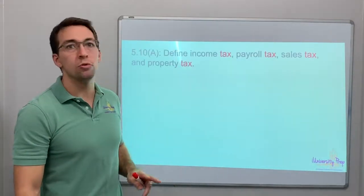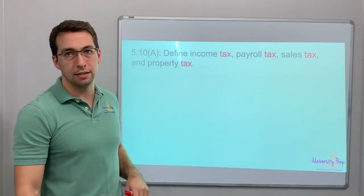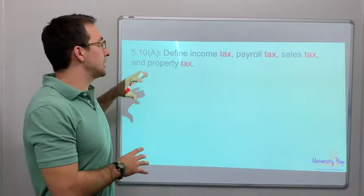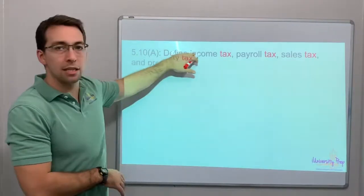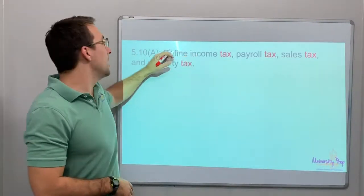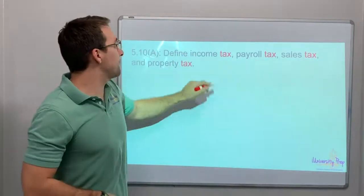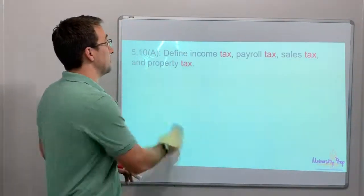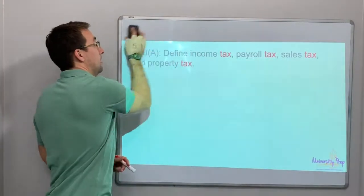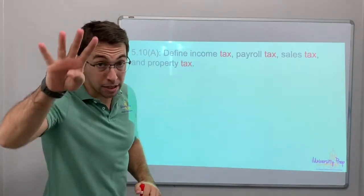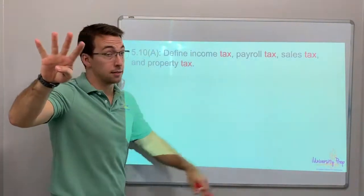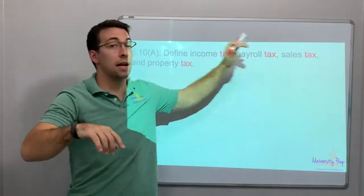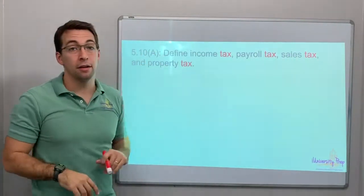I'm going to get asked probably one or two questions on the STAR test. The key with this cheat code is: can you define the different types of taxes? There are four types of taxes: income, payroll, sales, and property.